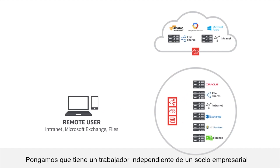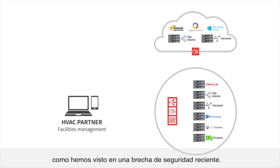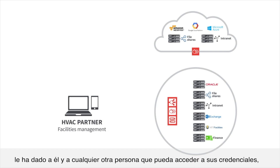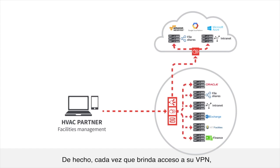Say you have a contractor or a business partner that needs to get to a single application to do their jobs. For example, a heating and air conditioning vendor, as we saw in a recent breach. Once you give that user VPN access, you've just given them, and anyone else that can get to their credentials, access to your entire network. The fact is, every time you provision VPN access, you're actually extending your network perimeter.